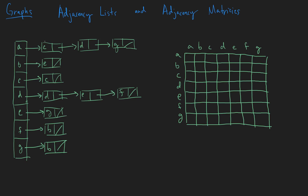So for A, in its adjacency list we have C, D, and G. So along this row we're going to write 1s at C, D, and G. Now, everything else is going to be zeros. Let's keep going. With B, it has an adjacency list with E — there's an edge from B to E.